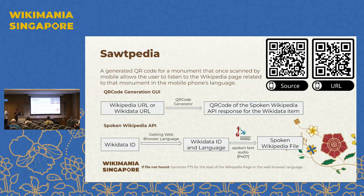Hello, thank you very much for being here. My name is Eamon, I'm from Tunisia, from the WikiWorldHeritage user group. I will present an application called Southpedia, which allows you to scan a QR code and listen to Wikipedia articles on your phone in the language of the phone. Southpedia enables the generation of a QR code for any monument, building, or museum collection. When you scan it, the system detects the phone's language and triggers listening to the corresponding Wikipedia article.